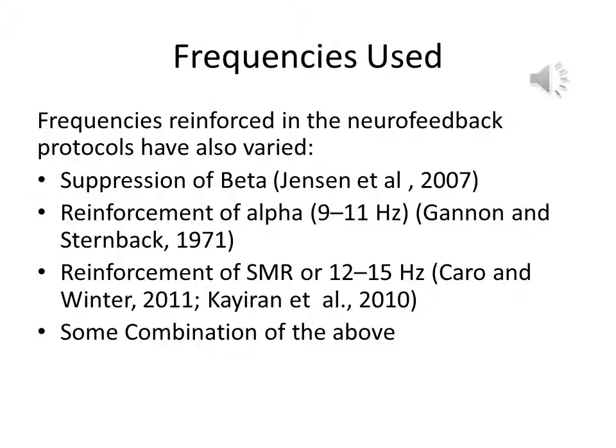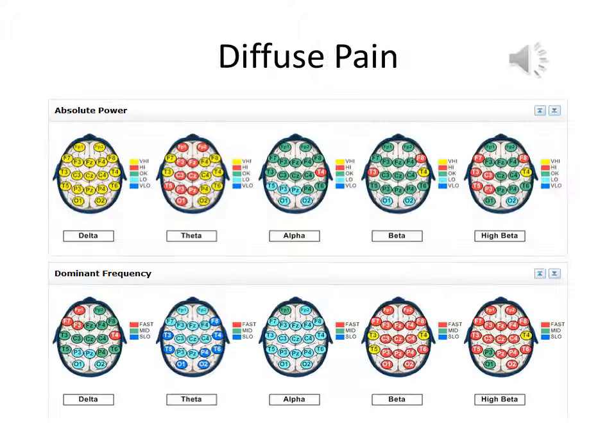To be more specific, frequencies reinforced in neurofeedback protocols have also varied, and involve suppression of beta, reinforcement of alpha 9 to 11 Hz, reinforcement of SMR 12 to 15 Hz, or some combination of the above.